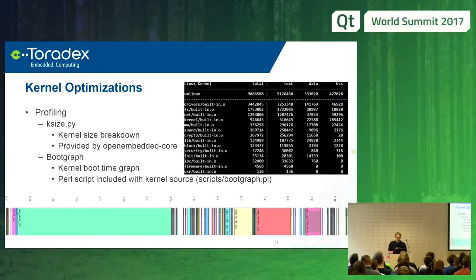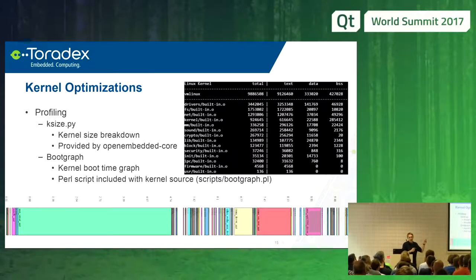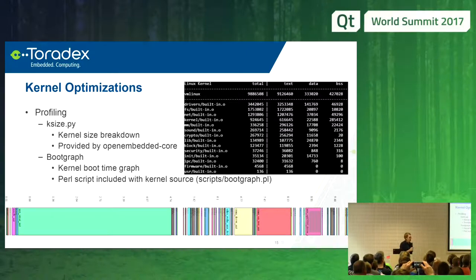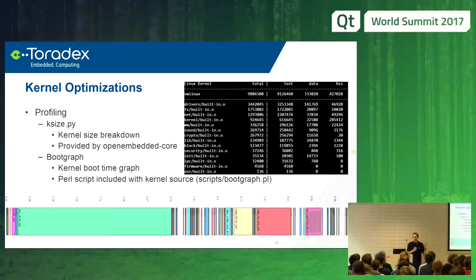There are also useful tools. One nice tool is the ksize.py Python script, provided by the OpenEmbedded Core community — you can find it in the OpenEmbedded Core Git tree. You run it in the kernel build directory and it shows the size of individual subsystems. You can see which drivers are large and probably need to be dropped. It really helps to monitor progress — whether enabling or removing a feature actually saved meaningful space.